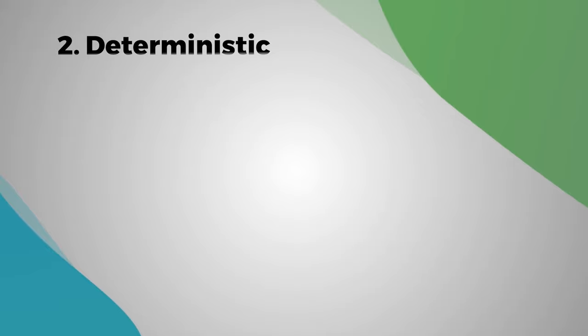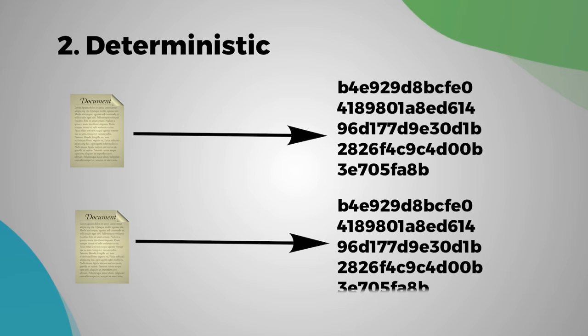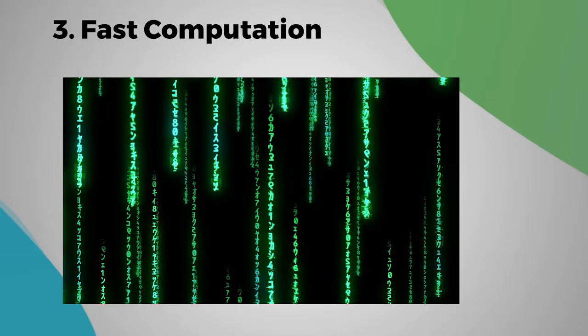Number two: it has to be deterministic, meaning that if I take the same document, exactly the same document later on, and I run the same hash algorithm again, I'll get exactly the same result, as we saw with that illustration. Third requirement: it has to have fast computation, and we'll see throughout the course why that's important.